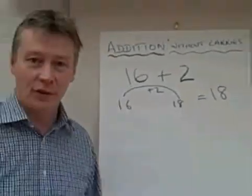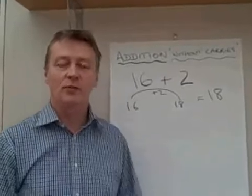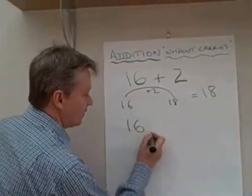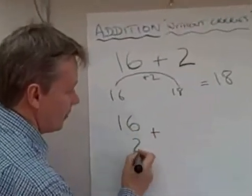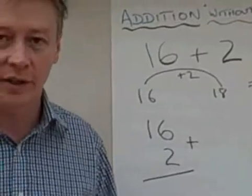Now the other method of doing it is something called a formal method. And what a formal method is, is where we put the numbers one above the other. So we've got 16 add 2, and you might have come across that in some of your schoolwork.